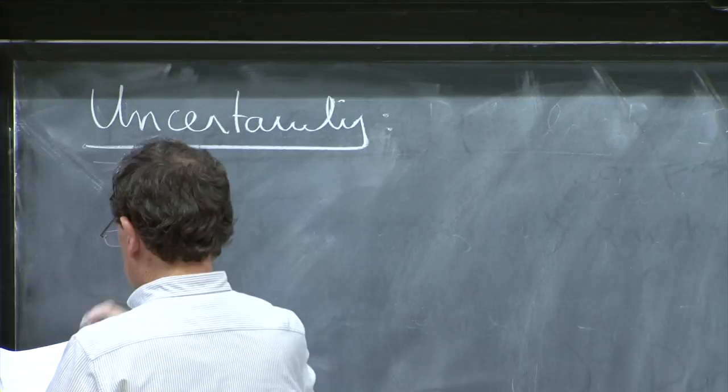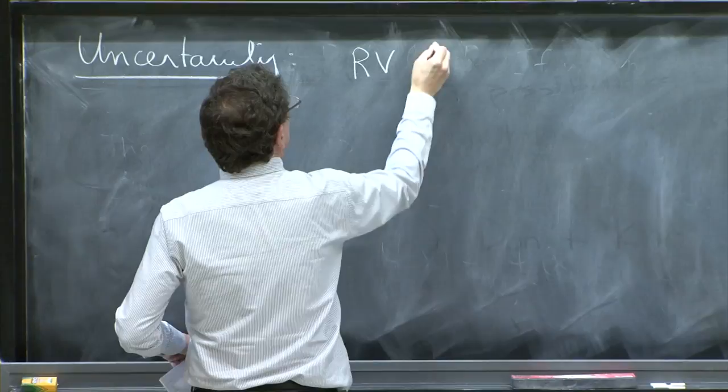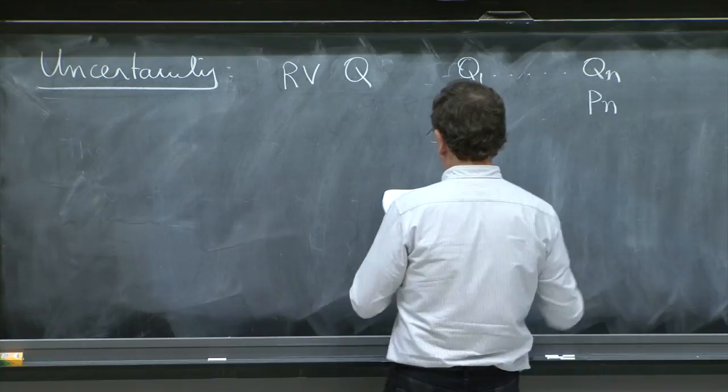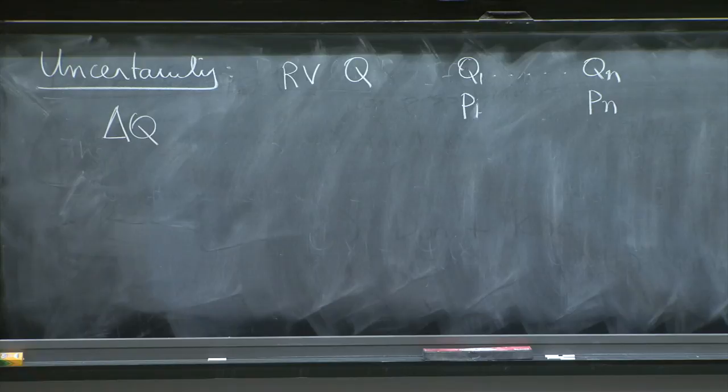Uncertainty. When you talk about random variables, random variable q, that we've said has values q1 up to qn and probabilities p1 up to pn, we speak of a standard deviation, delta q.